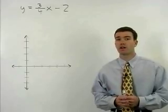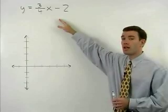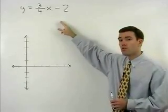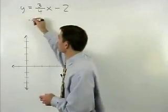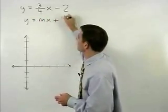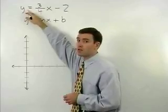So let's graph the line that has the equation y equals three-fourths x minus two. We know that this line is in slope intercept or y equals mx plus b form because y is by itself on one side of the equation.